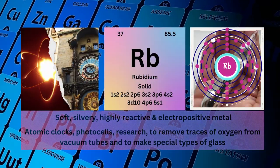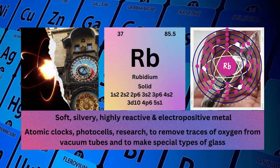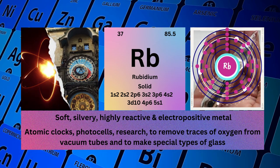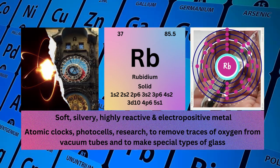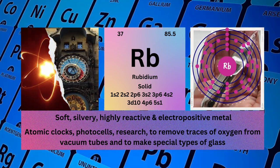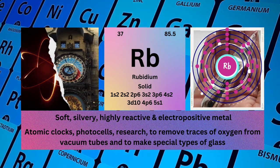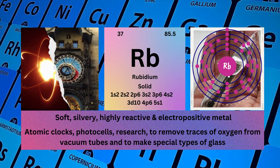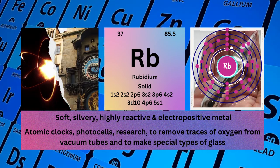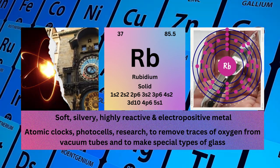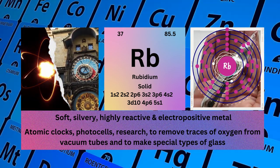Rubidium. Atomic number 37. Mass number 85.5. Symbol RB. State solid. Electronic configuration 1s2 2s2 2p6 3s2 3p6 4s2 3d10 4p6 5s1.